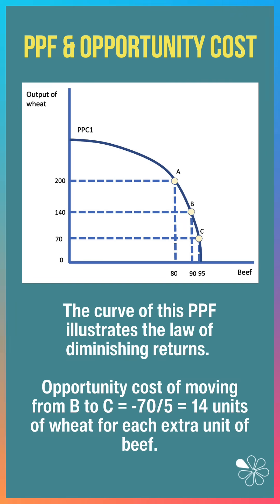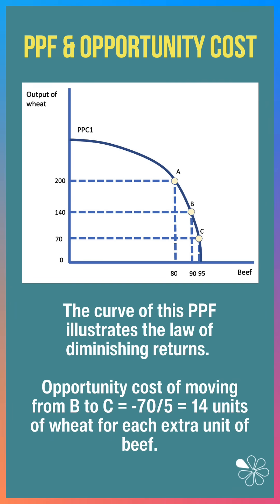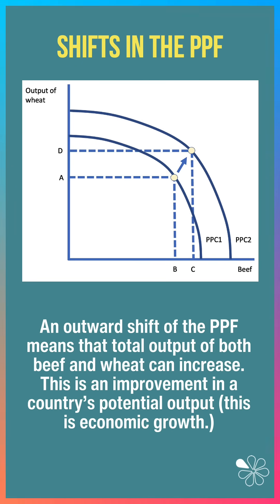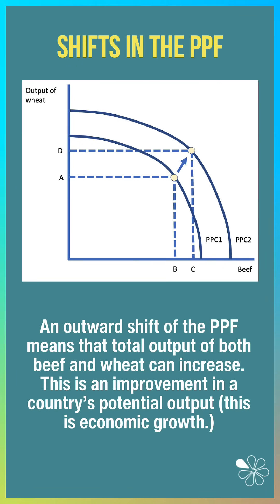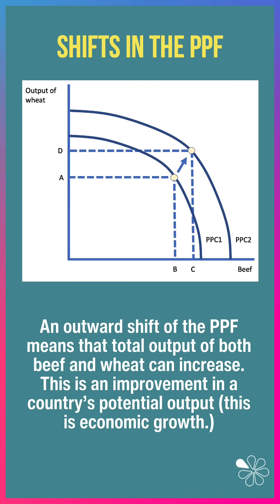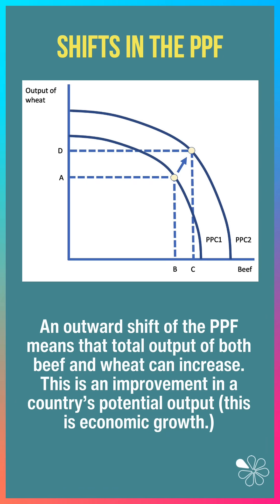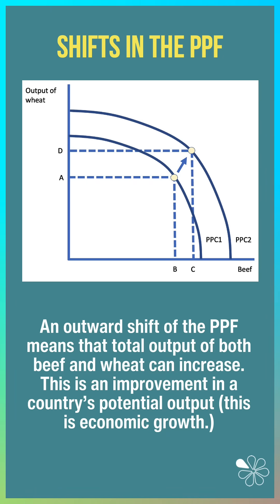For example, the opportunity cost is increasing from B to C — 14 units of wheat must now be sacrificed for each extra unit of beef. An outward shift to the PPF means that the total output of both beef and wheat can increase, as shown here. This is an improvement in potential output, or economic growth.